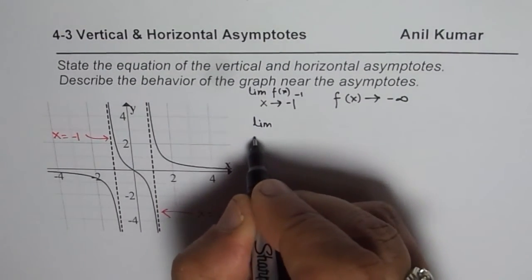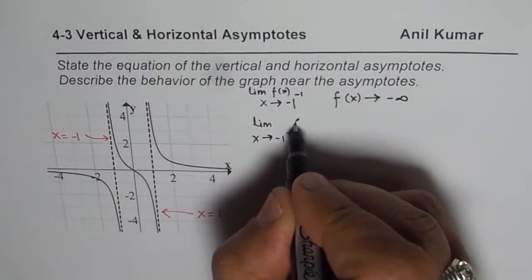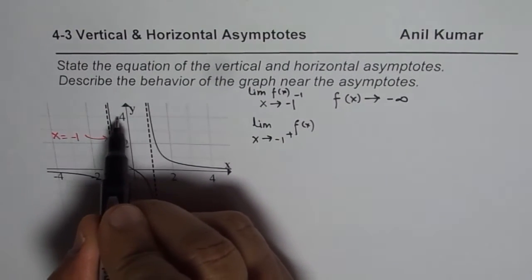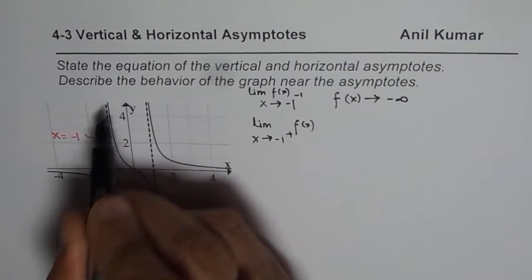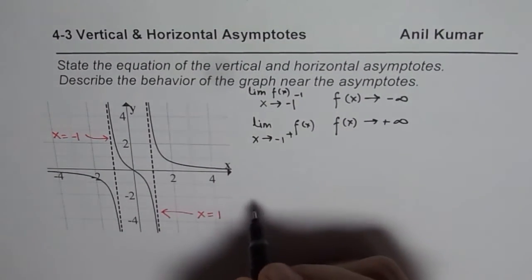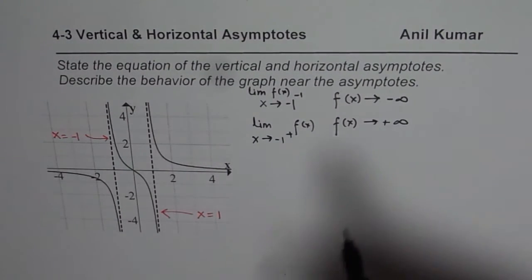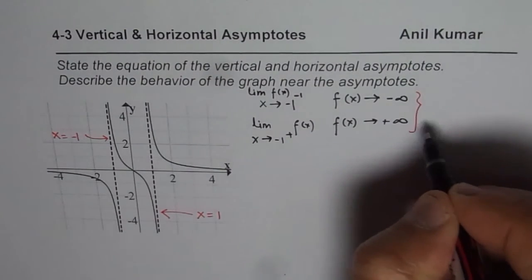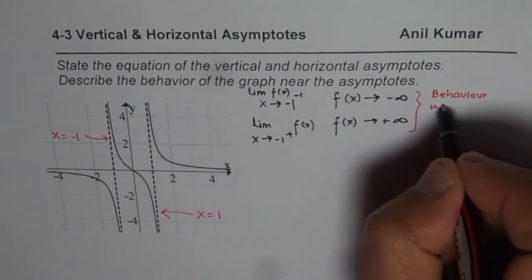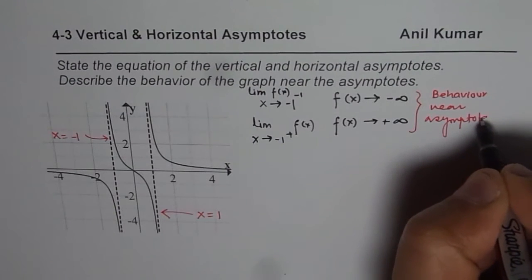Now the limit of the function as x approaches minus 1 from the positive side — from the right side — the function approaches positive infinity. So f(x) approaches positive infinity. This is called behavior near the asymptote. What we are writing here in the form of limits describes the behavior near the vertical asymptote x equals minus 1.